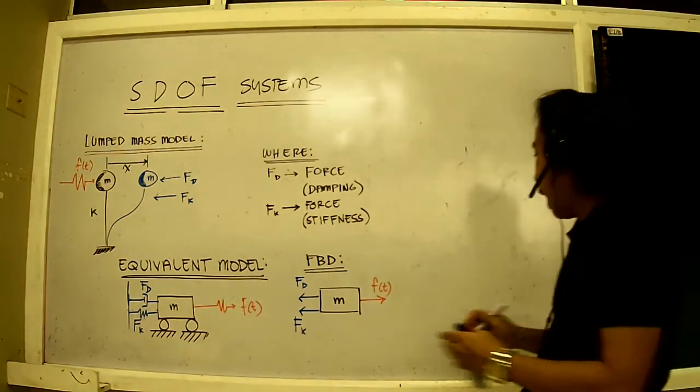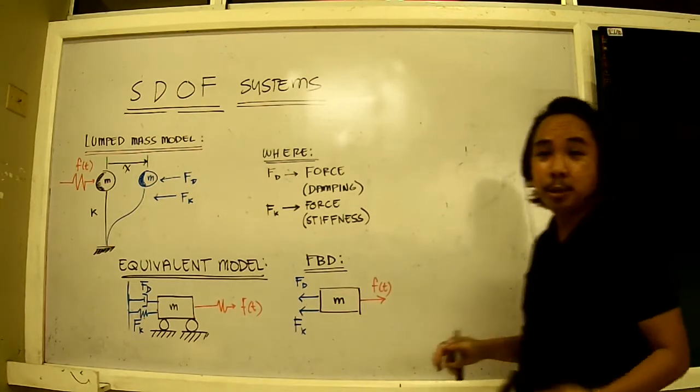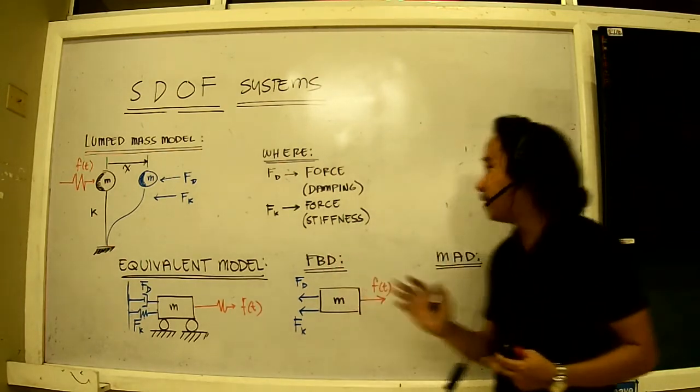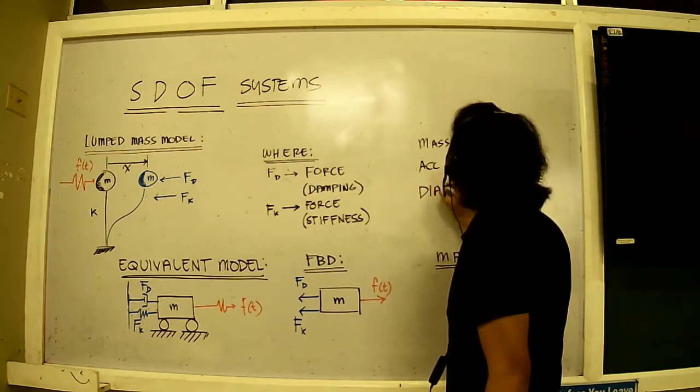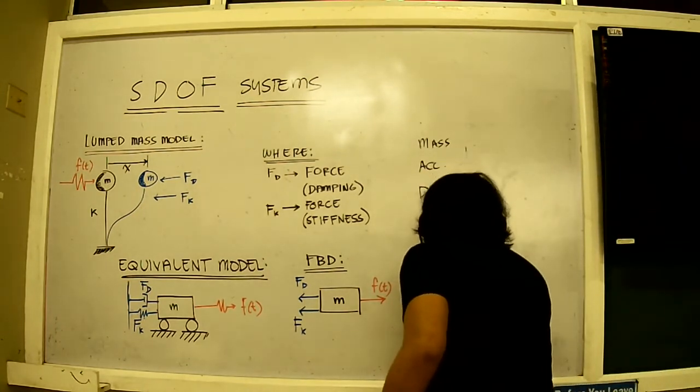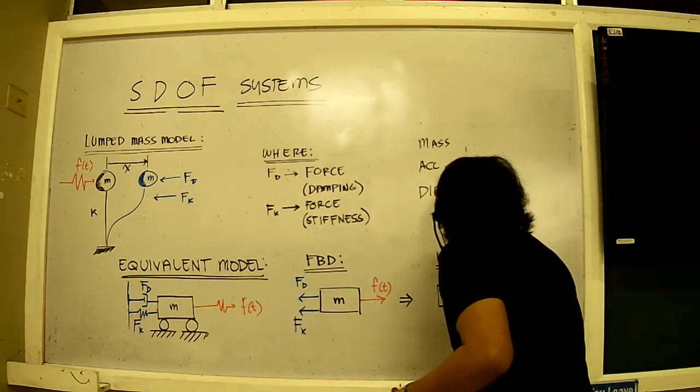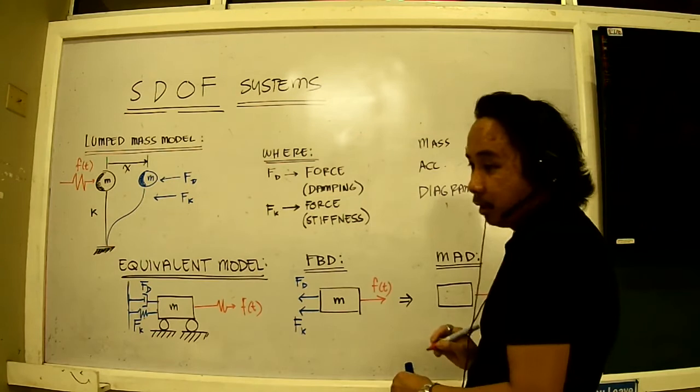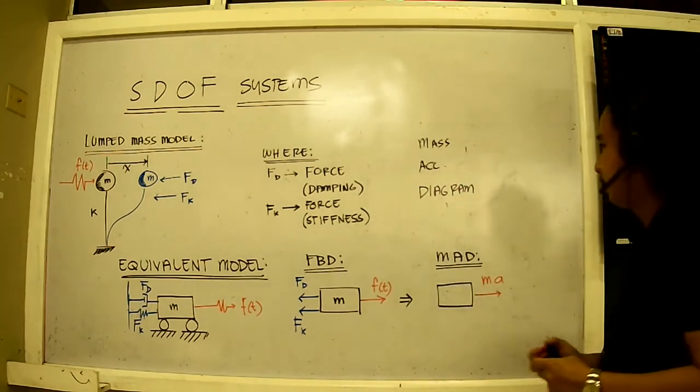Now, aside from that, I would like to find another equivalent for this that will end up as the resultant. I just call this MAD. MAD stands for Mass Acceleration Diagram. Mass Acceleration Diagram. Now, all of these forces should coincide and should result to this. Still having our mass here, but the resultant is that in the end it will still move this way. So, mass times acceleration.